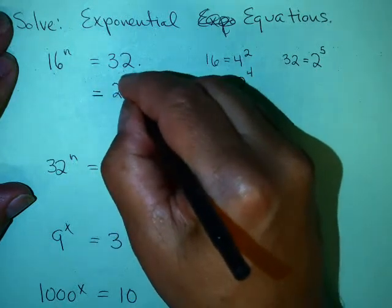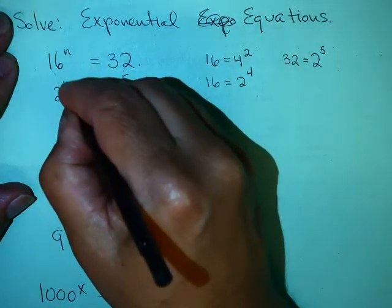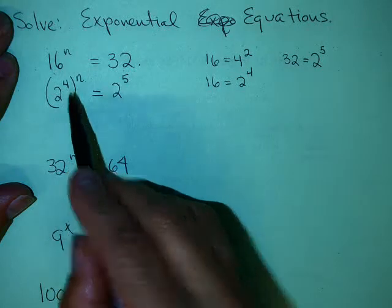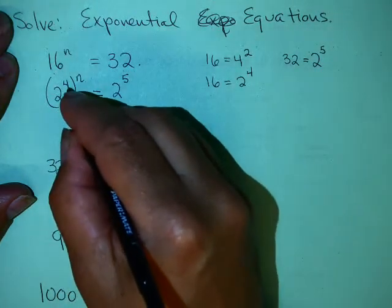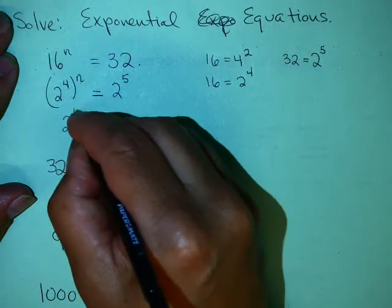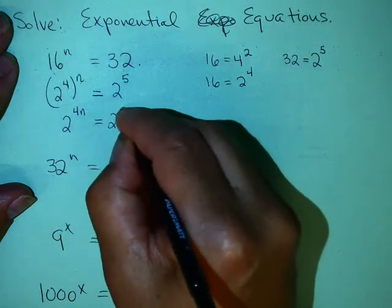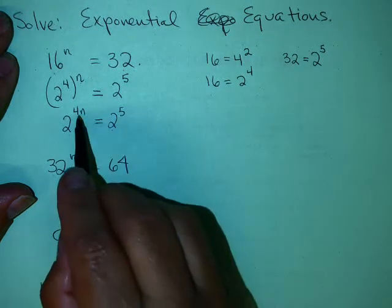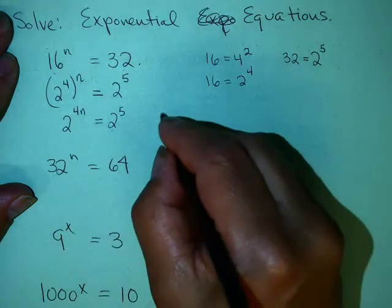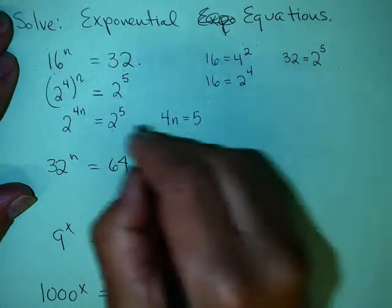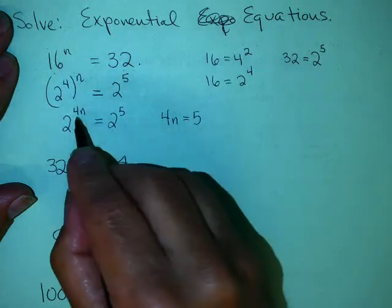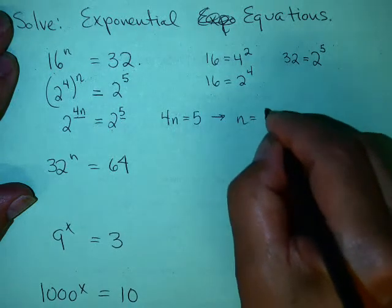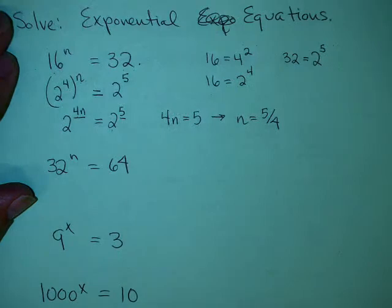So 32 is 2 to the 5th, and 16 is 2 to the 4th raised to the nth power. Using those laws of exponents, that's 2 to the 4n equals 2 to the 5th. Now, if you have the same base on both sides, the exponents must be equal. So 4n has to equal 5, which tells me that n equals 5 fourths.